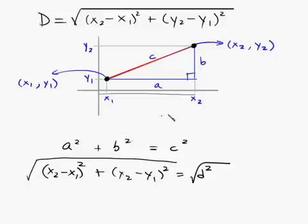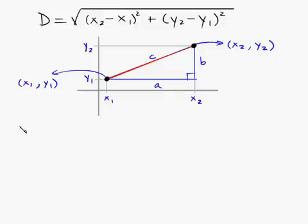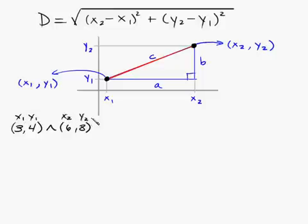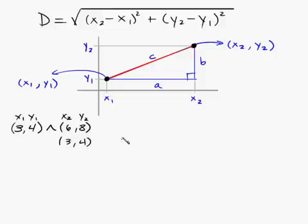Now that we know this, let me show you how to apply this formula. Let's say you have the point (3, 4) and the point (6, 8). We'll call (3, 4) x1, y1, and (6, 8) x2, y2. A student tip: write the first point underneath the second so you just read off 6 minus 3 and 8 minus 4 without having to look back and forth. Let me relabel this x1, y1 and set up our formula.